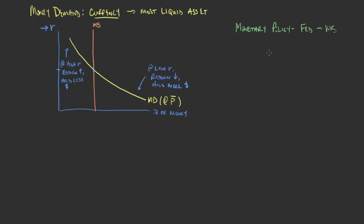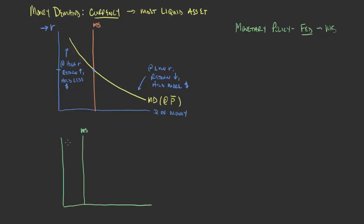Anytime in economics or just in the general economy and business you're hearing talk about monetary policy, we're almost always talking about interest rates. We're talking about the money supply, about decisions that the Federal Reserve makes that change the supply of money. We've talked about how these curves are shaped, and what the return on investment would look like — why we have a downward sloping curve for money demand.